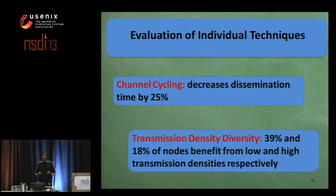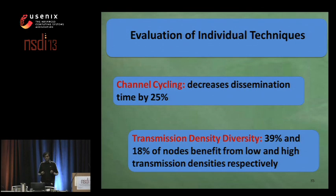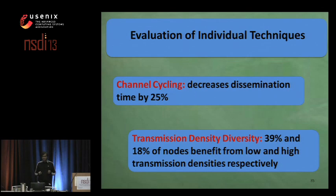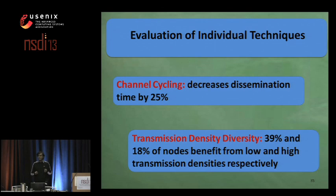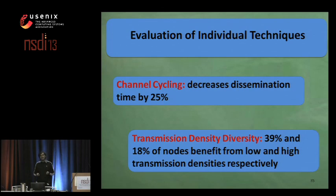In order to evaluate the effectiveness of exploiting transmission density diversity, we conducted a separate set of experiments in which we observed that about 39% of nodes benefit from low transmission density, and 18% of nodes benefit from high transmission density.